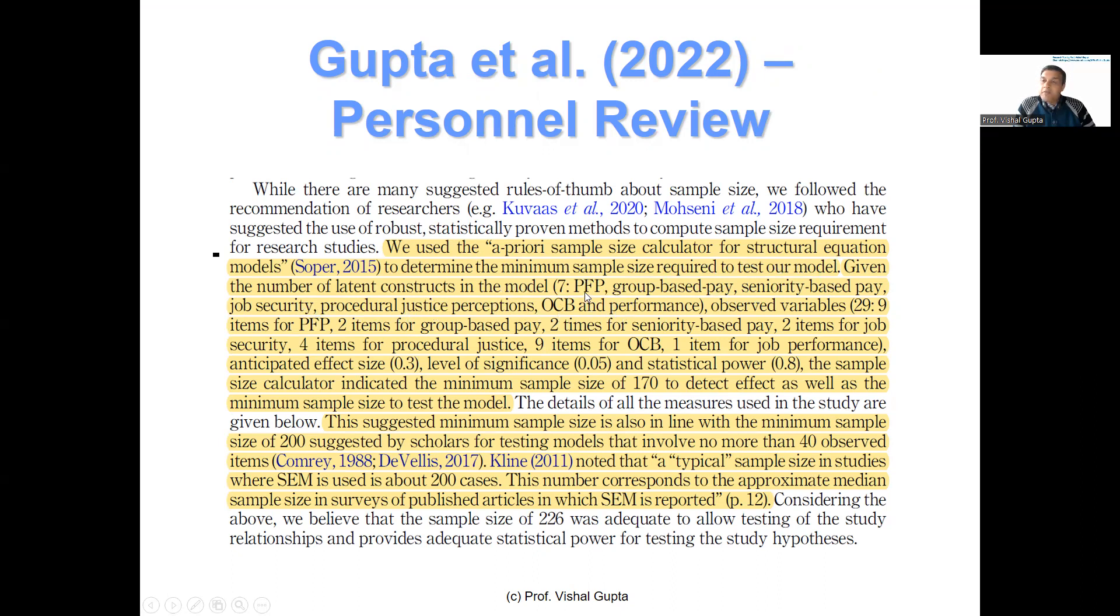Observed variables were 29. I gave details: nine items were for PFP, two items for group-based pay, two items for seniority-based pay, two items for job security, four items for procedural justice, nine items for OCB, and one item for job performance. Anticipated effect size was 0.3, level of significance was 0.05, and statistical power was 0.08. So the sample size calculator indicated a minimum sample size of 170.